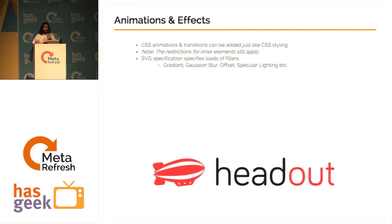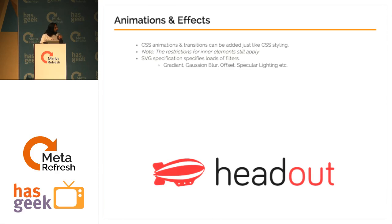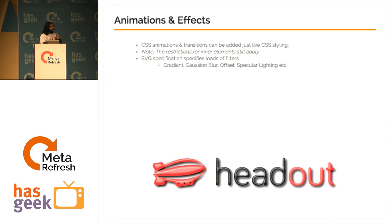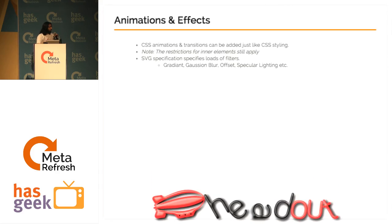SVG specification also has loads of filters in XML format — filters like specular lighting, Gaussian blur, and gradients. I created a filter which is kind of like a bevel and emboss filter, which basically converts the SVG like this. And if you don't like the filter, you can just add in some gravity and they just fall.